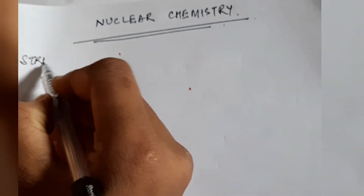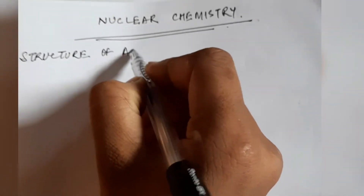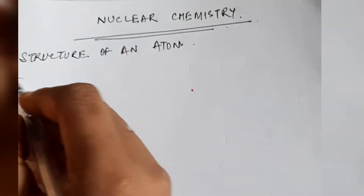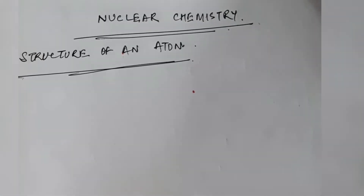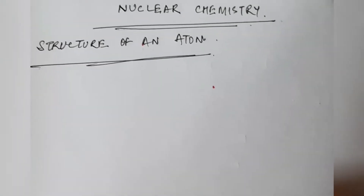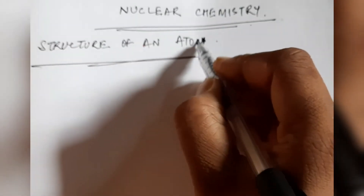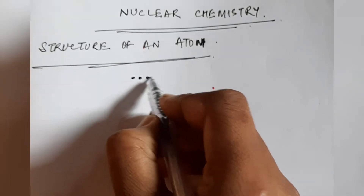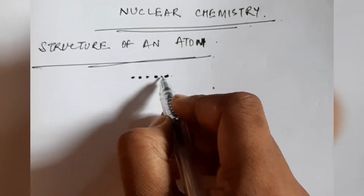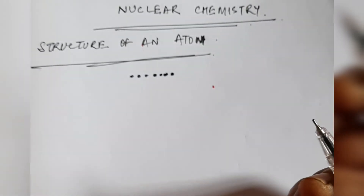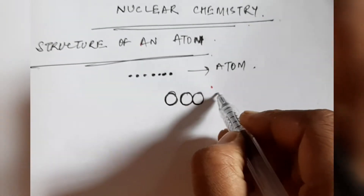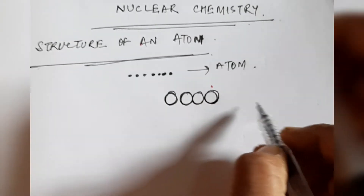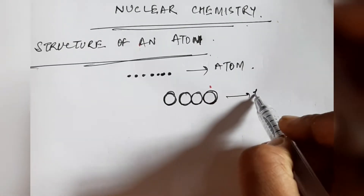To understand nuclear chemistry we have to understand the structure of the atom. Whenever you take a substance and break it into very small parts, you get smaller and smaller particles. These particles — the smallest particle which cannot be disintegrated further — we call an atom, which is very small in size.